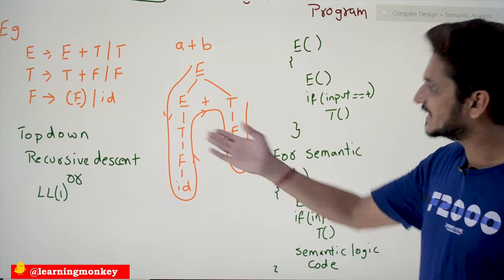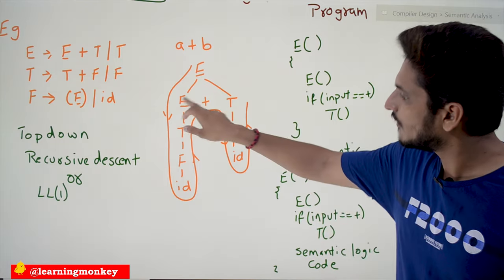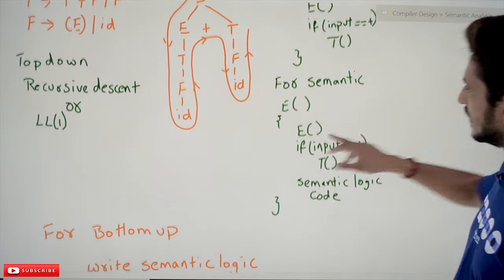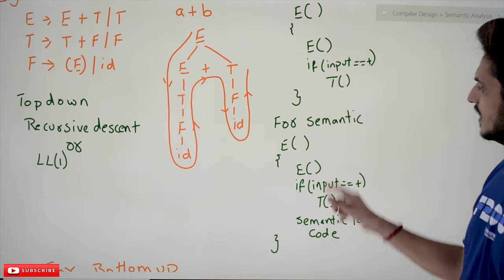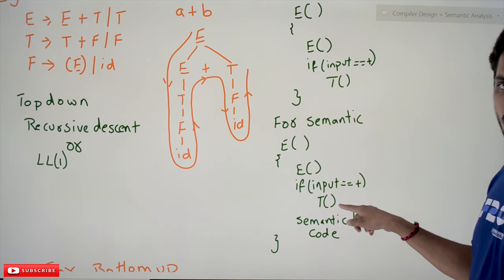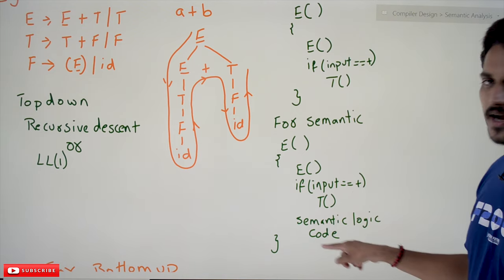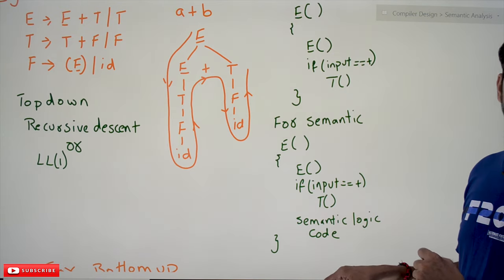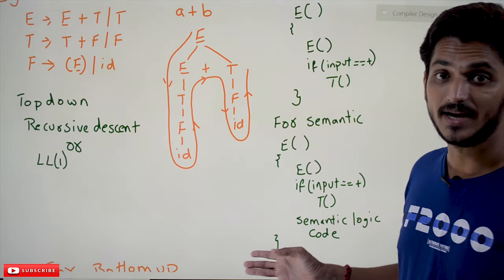In this example, we are going to check the type casting of two variables after the evaluation of E + T completes. So we add the semantic logic to the same code: after e() is called, if input equals plus and t() is called, after coming out of the if block we write the semantic logic code here.